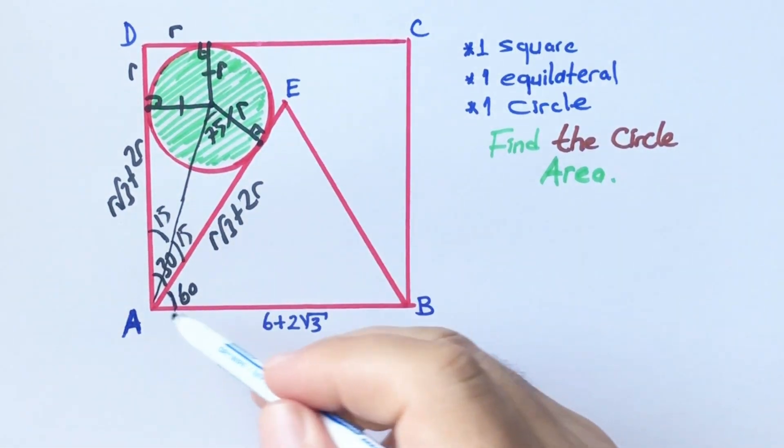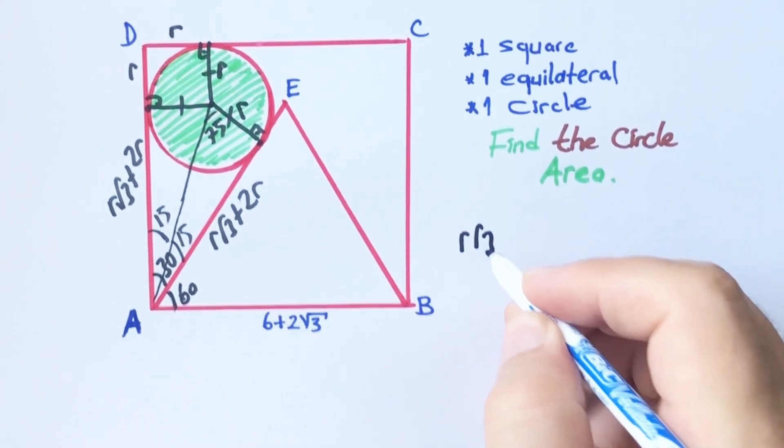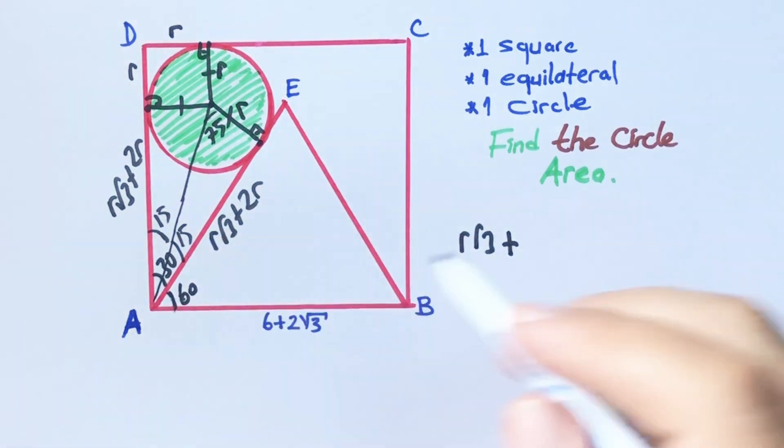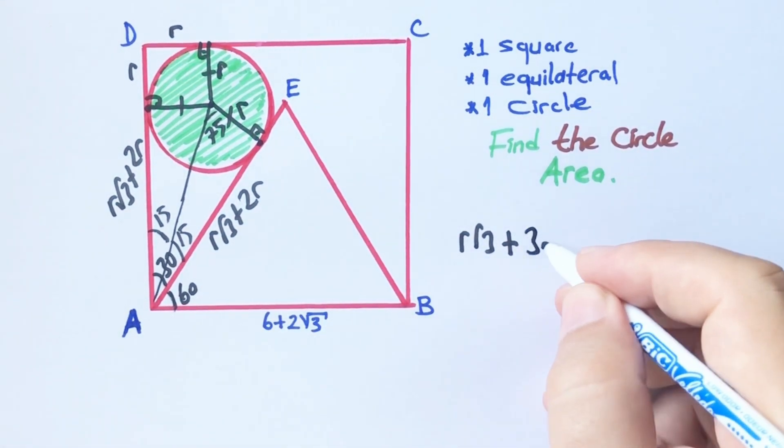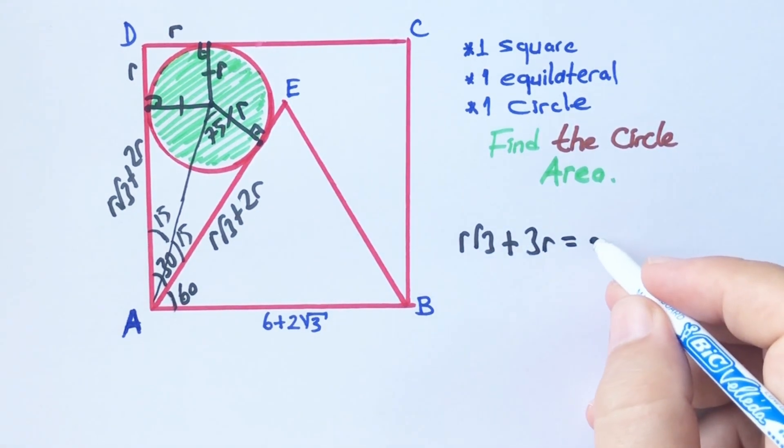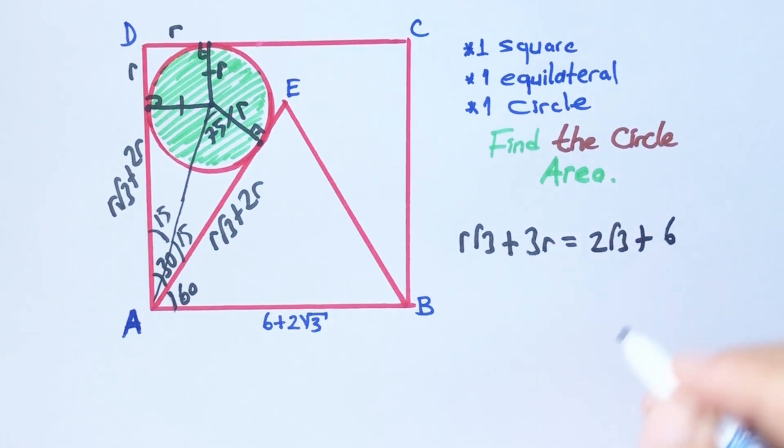We know that all sides of the square are equal. Therefore, r√3 + 3r must be equal to 2√3 + 6.